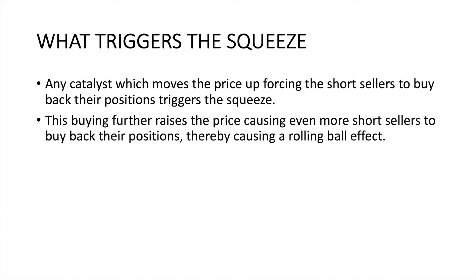When this buying back happens, there is huge demand and buying pressure, which pushes prices up further. Already something started driving the prices up, and as the short sellers are forced to buy shares, this buying pressure further keeps pushing prices up. As the price goes up further, more and more short sellers need to cover their positions because their stop losses are hit — this becomes a rolling snowball effect, a kind of self-fulfilling prophecy.